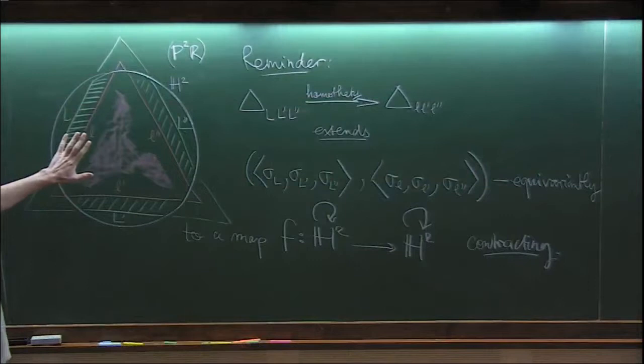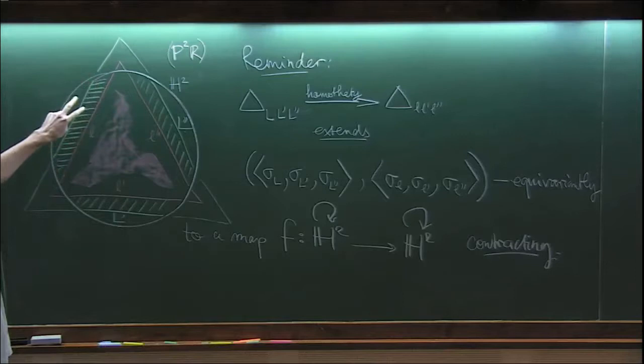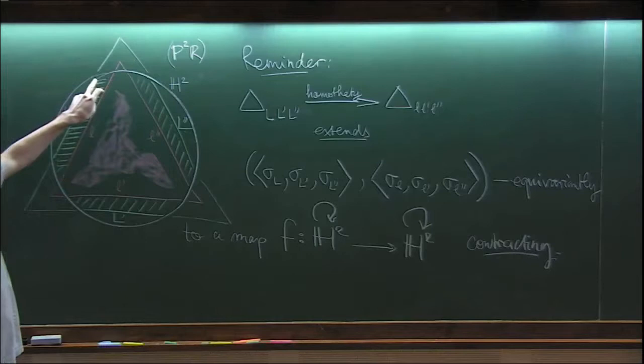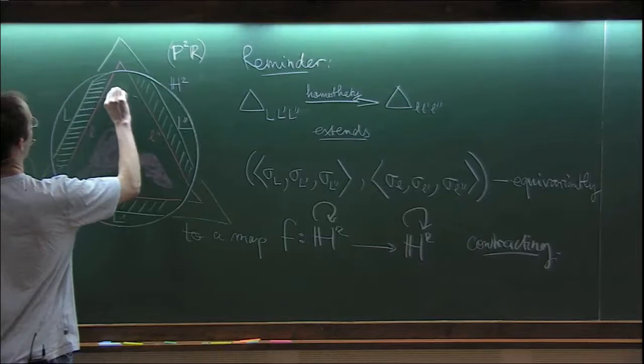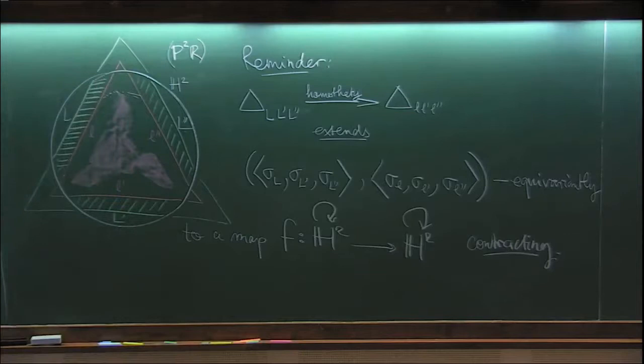Mind you, we mean contracting for the metric on H2. So this homothecy is contracting by a certain factor. But it's not a uniform factor if you look at it in the hyperbolic metric. In fact, points close to the boundary here will be mapped to points close to a new, slightly smaller conic down here. And contraction there will be, in fact, by a huge factor.